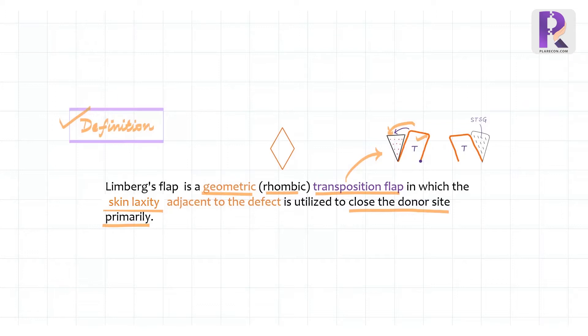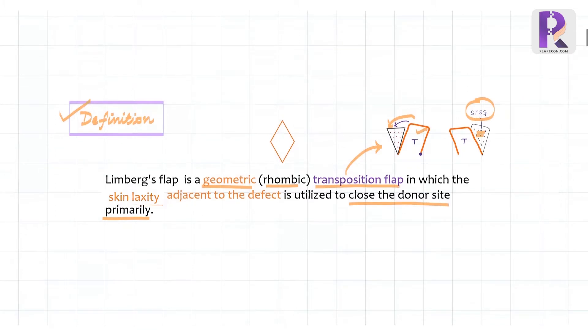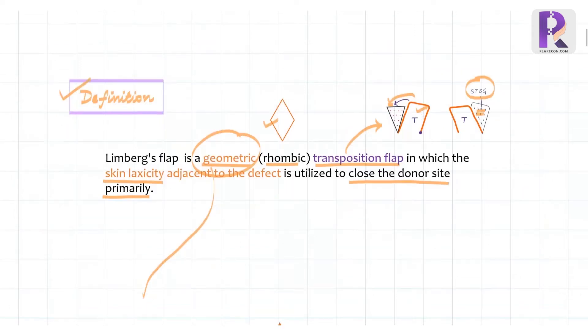We also know that in the classical transposition flap the donor site has to be covered by a skin graft. But the Limburg flap, like the bilobed flap or the flaps in Z-plasties, are specialized transposition flaps which make use of their geometric shape and design. So let's move on to the geometry of the Limburg flap.